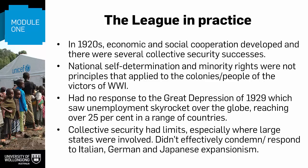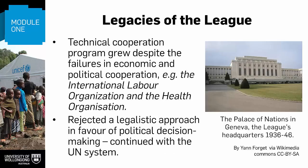There were around 37 disputes between 1920 and 1937, and only 14 of those were referred to the League of Nations, and of those 14, only 6 were actually resolved by the League. A couple more positive legacies of the League were that technical cooperation did grow despite the failures in economic and political cooperation. So the International Labour Organization and the Health Organization, later the World Health Organization, were both established under the League. The League also rejected a legalistic approach in favour of political decision-making about international issues, and this continued with the United Nations system, although legal channels have grown as well.